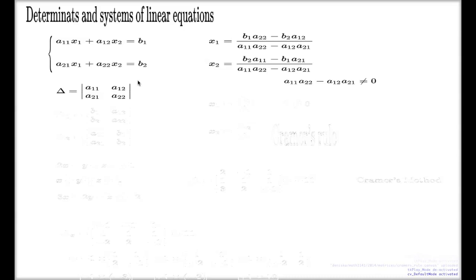Computationally, I wouldn't say this is much better than row echelon form. Probably it won't be. But still, it is an alternative way of doing things. Now, how do we remember the numerators in these two formulas?